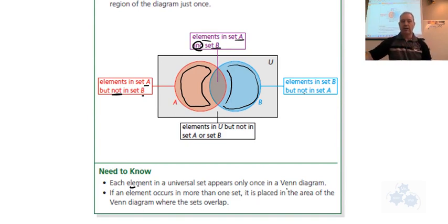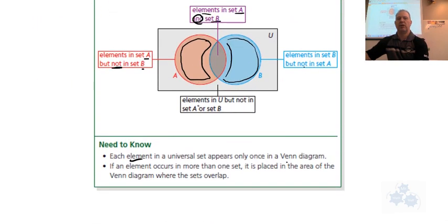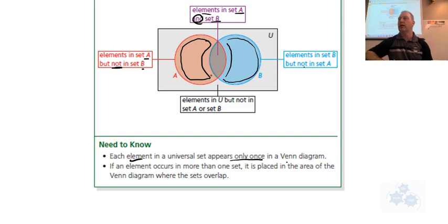Each element in the universal set appears only once in the Venn diagram. As we had before when we ran into problems, we had 15 kids in both sets and had counted them twice. So each element only appears once in the Venn diagram. If an element occurs in more than one set, it's placed in the area of the Venn diagram where the sets overlap. That's the basic stuff here — we'll get into more notation next section.